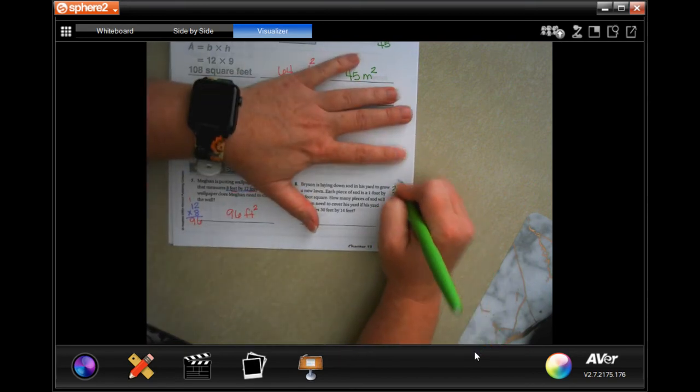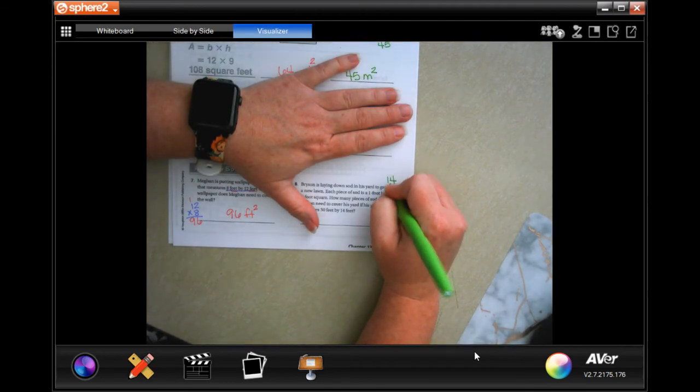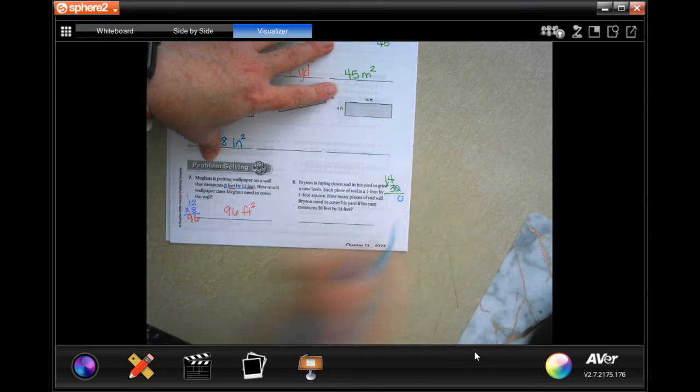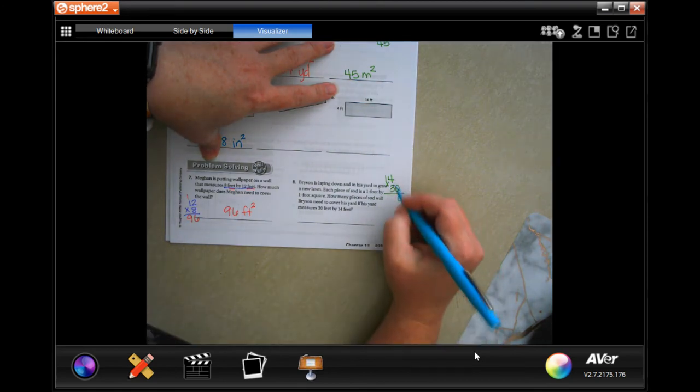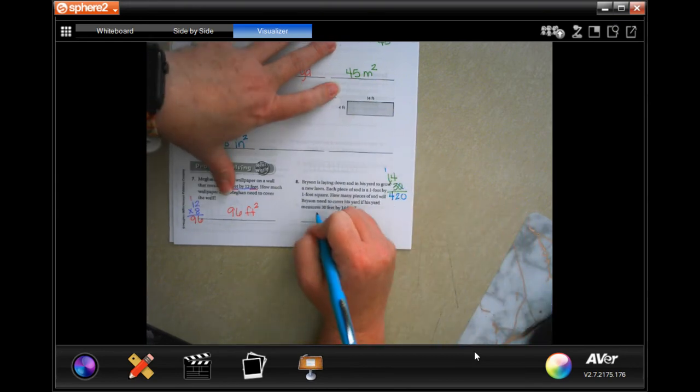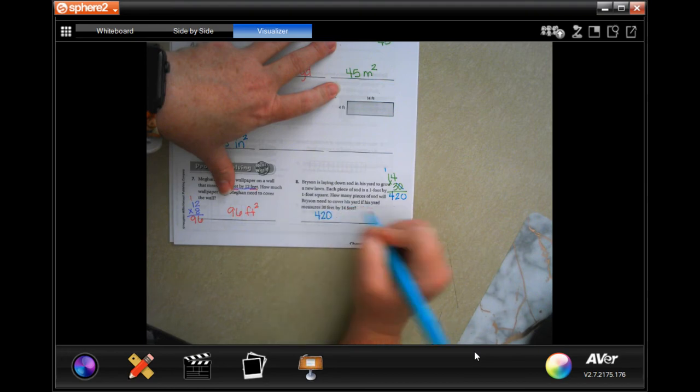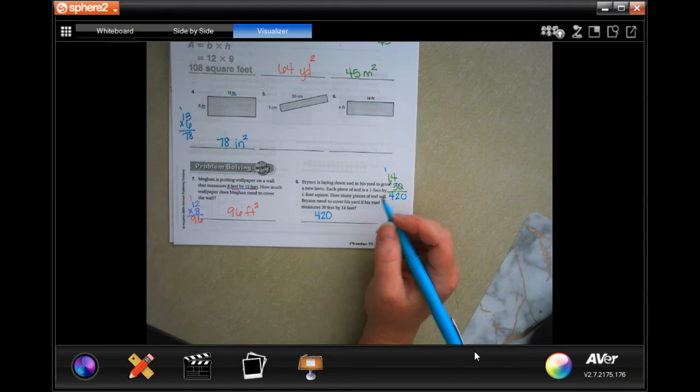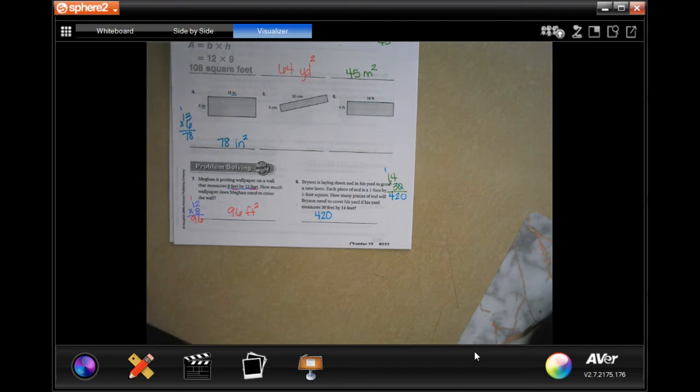Well, I'm going to put that 14 up top, and I'll show you why, because I'm going to cross off that zero and put it right there. Then I'm going to do three times four is 12, carry the one. Three times one is three, plus one more is four. Four hundred and twenty.